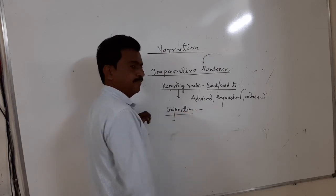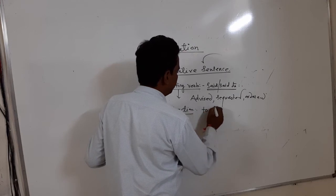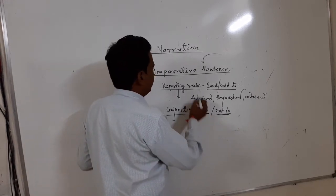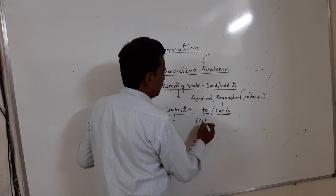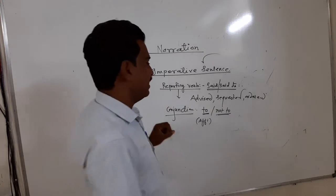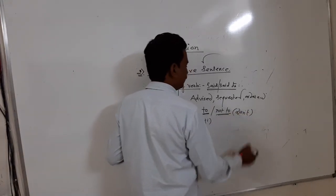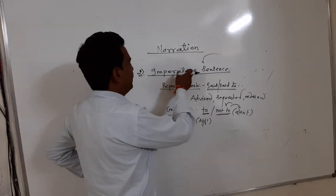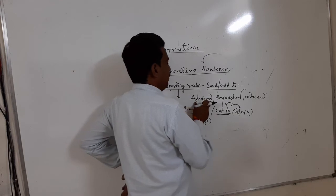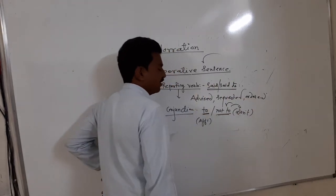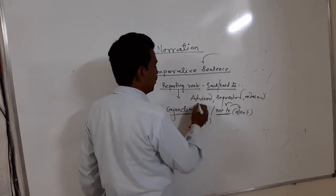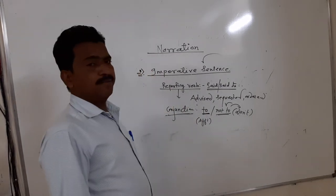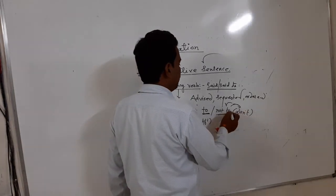And the conjunction for imperative sentences: we use 'to' or 'not to.' For a negative sentence — when it begins with 'don't' — we use 'not to' in place of 'don't.' So in the imperative sentence, the reporting verb may be 'advise,' 'request,' 'order,' or 'command,' and the conjunction is 'to' for affirmative and 'not to' for negative sentences.